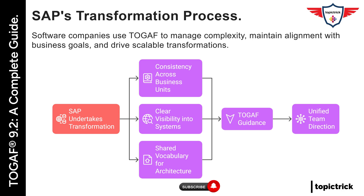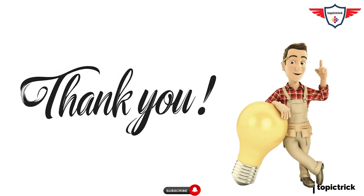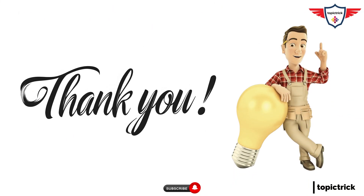To sum up today's lecture: TOGAF is a comprehensive framework used globally to guide enterprise architecture development. It provides a structured approach through its ADM cycle, which covers everything from vision to implementation. Its modular tools like the content framework and enterprise continuum help tailor the architecture process to your organization. Software companies use TOGAF to manage complexity, maintain alignment with business goals, and drive scalable transformations. If you learned something new, make sure to like this video, subscribe to the Topic Trick YouTube channel, and share it with other architects or tech professionals who could benefit from this.